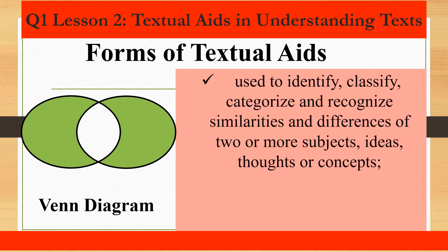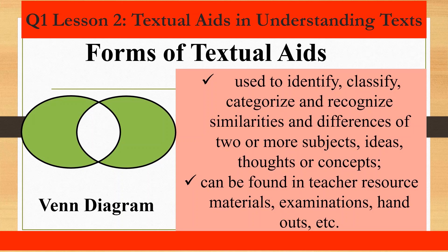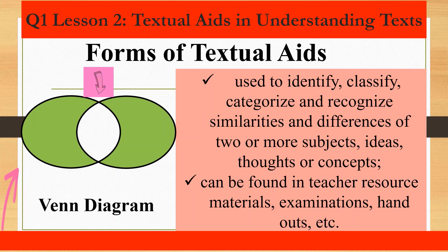The Venn diagram is used to identify, classify, categorize, and recognize similarities and differences of two or more subjects, ideas, thoughts, or concepts — or simply to compare and contrast ideas. It can be found in teacher resource materials, examinations, handouts, and more. Circles that overlap show the similarities, while circles that do not overlap show the differences.